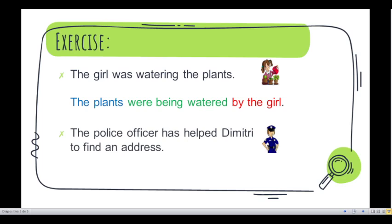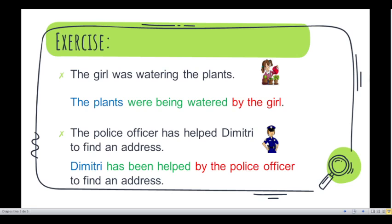Another sentence. The police officer has helped Dimitri to find an address. To find an address is the complement of that sentence. So what would be the passive voice of that sentence? Is it a little tricky or not? Well, let's see the answer. Dimitri has been helped by the police officer to find an address. Excellent.